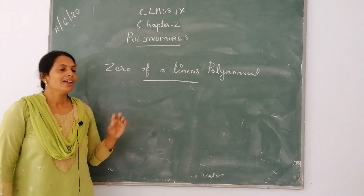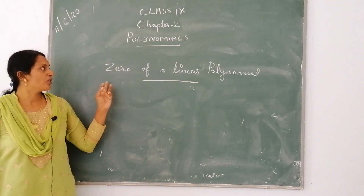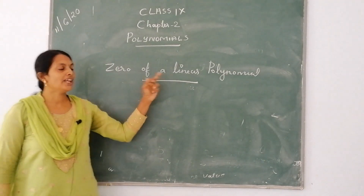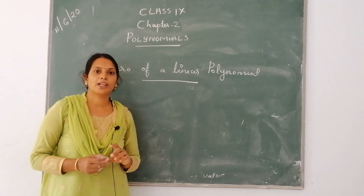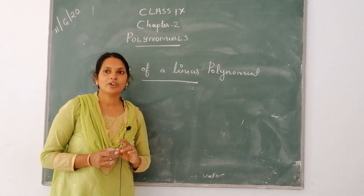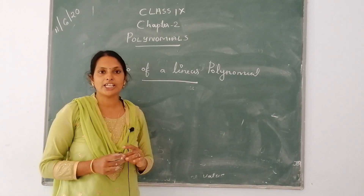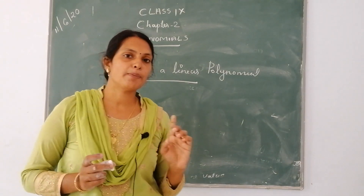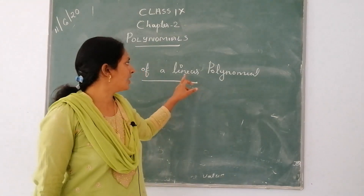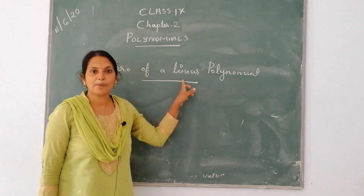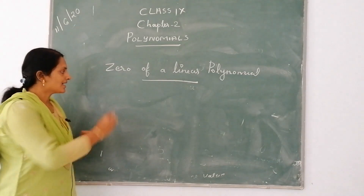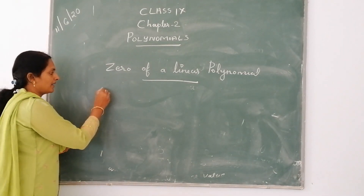Good morning. Next, we are going to discuss the zero of a linear polynomial. You already know what a linear polynomial is. A first degree polynomial is called a linear polynomial. Then consider an example.